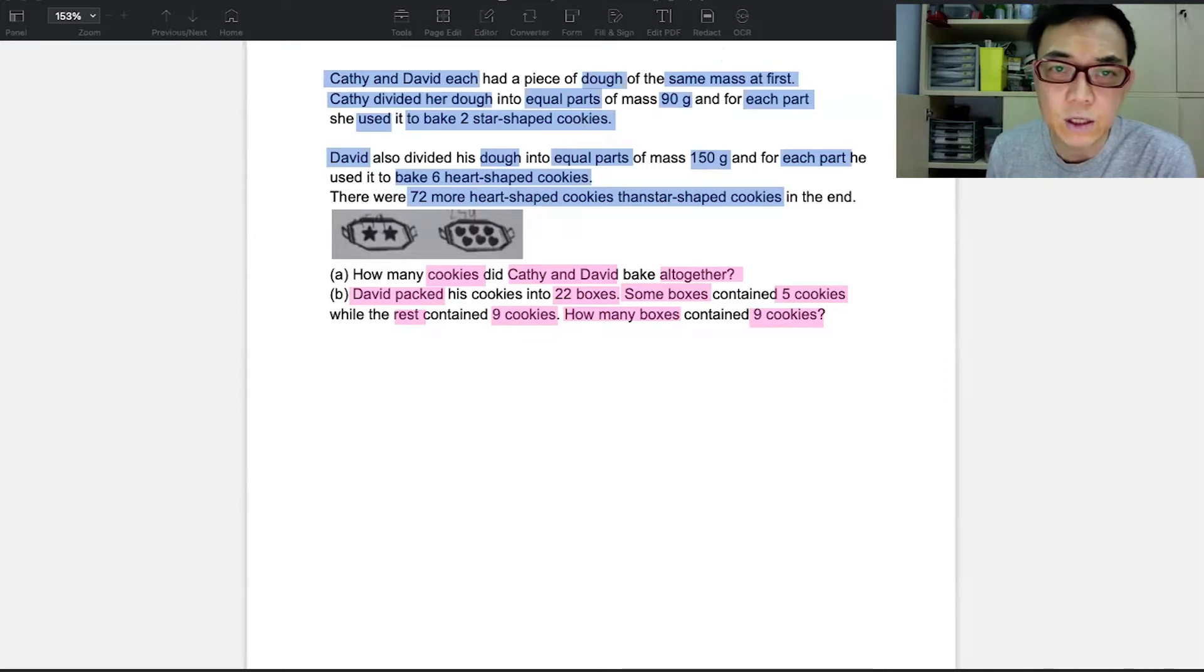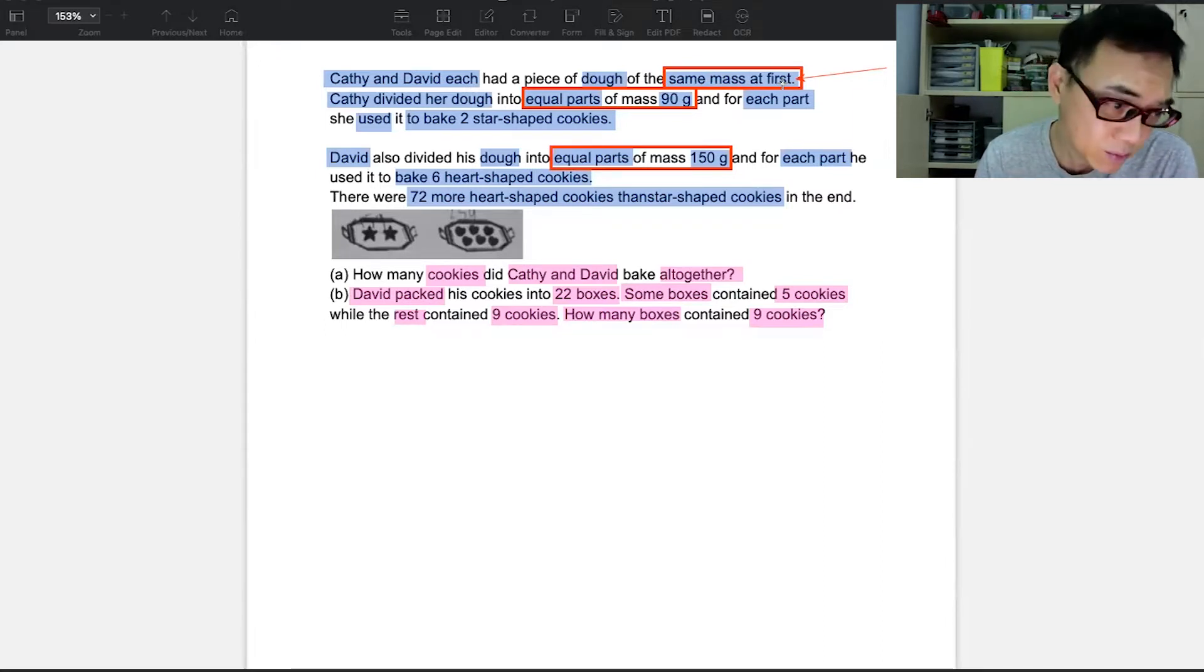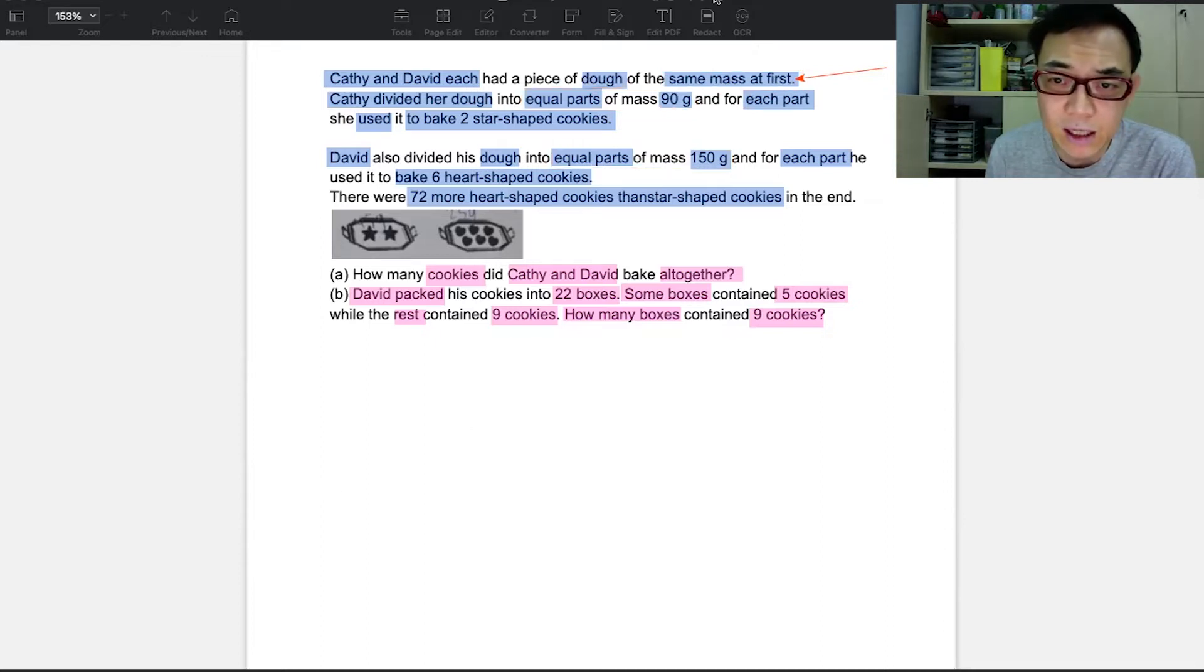So what is the first thing that you'll notice here in this question should be that they had the dough was the same mass at first. Normally when you talk about same mass, they are talking about common multiples. So they say that Katie divided her dough into equal parts of 90 grams and David divided his equal parts of 150. So the first thing I want you guys to pay attention to is for Katie it was equal parts of 90, for David it was equal parts of 150. But since they have the same mass at first, then it must be a multiple of both these numbers. Otherwise they cannot be equal.